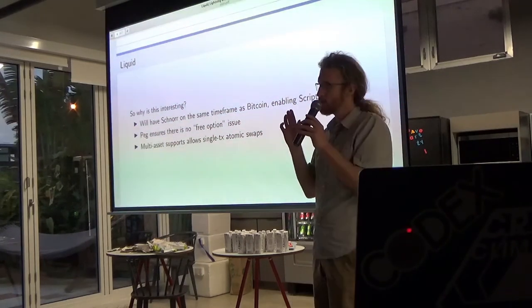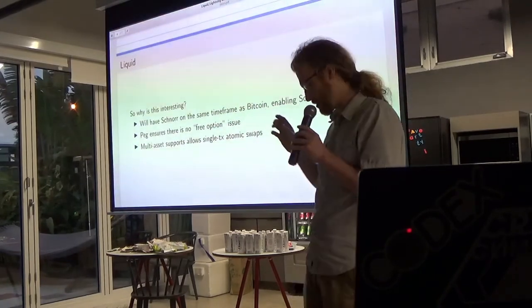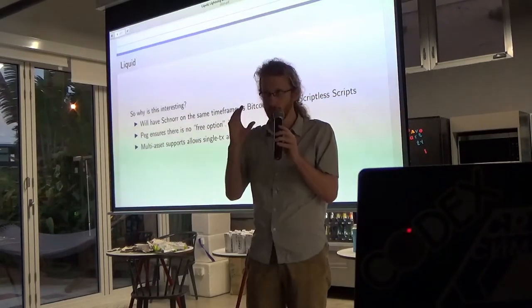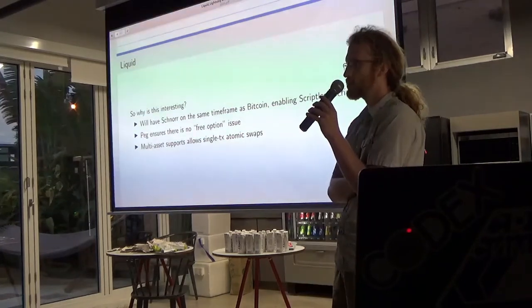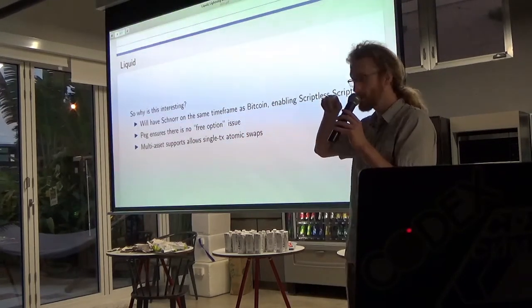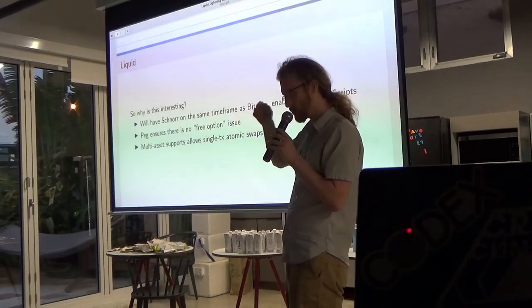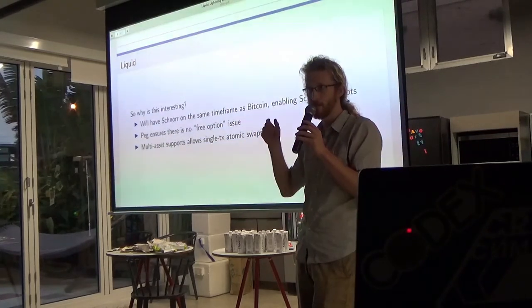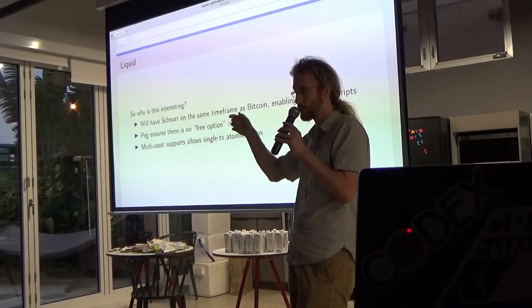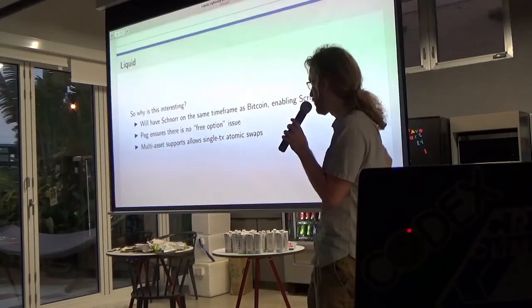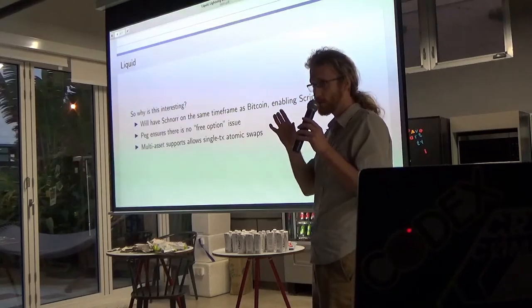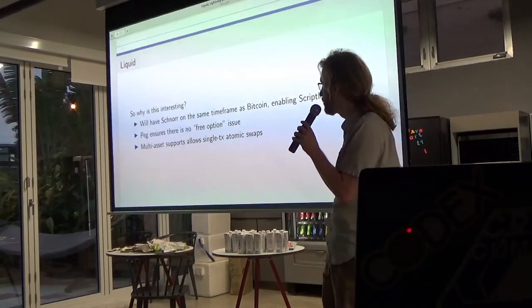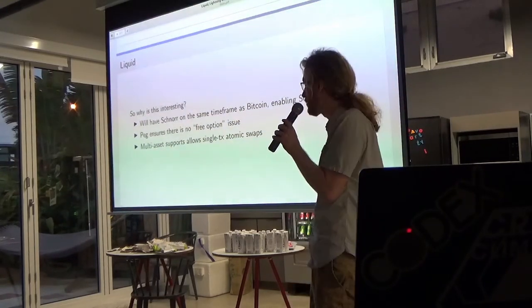One thing that plagues atomic swap designs is the so-called free option problem. If you're moving between blockchains that have different assets with different valuations and floating exchange rates, then when you start this multi-party protocol before everyone's timelocks are up, if the exchange rate fluctuates, one party might have an incentive to go offline and wait until the price moves in their favor, then come back and complete the protocol. The nice thing about Liquid is it has a one-to-one peg to Bitcoin, so there's no free option issue — the swap protocol can take as little or as much time as you want.